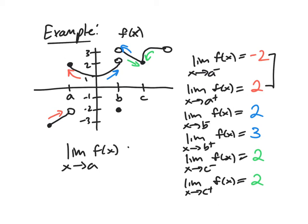the limit as X approaches A of f(X), we would write DNE for does not exist. It's not approaching one specific value because it's approaching a different value from each side. Similarly, two is not equal to three, so the limit as X approaches B also does not exist.